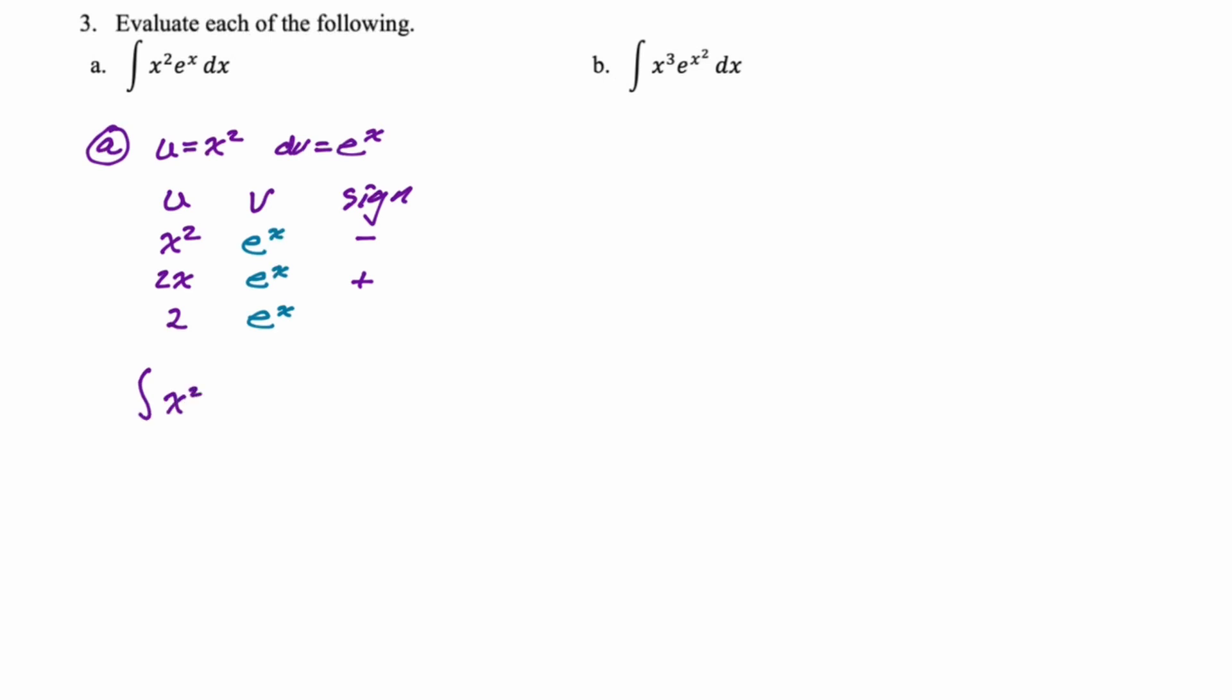So to write this down, our integral x squared e to the x dx, is going to be just multiply the u and the v and then put the sign. So it's x squared e to the x and then minus. Now our next term, multiply 2x e to the x. And then the sign between the two terms, the next term will be plus. And then 2 e to the x. And there's nothing else, so it would be plus c. So that's how I always do it. It's pretty quick. I recommend it for sure. Table method, good way to do these.